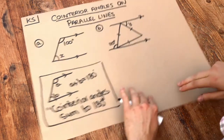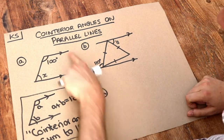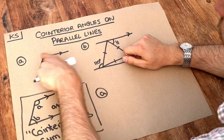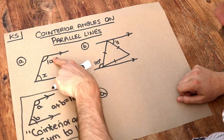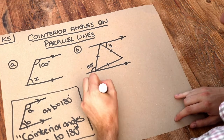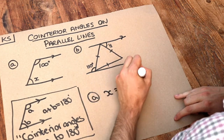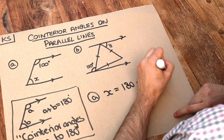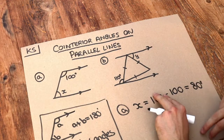Let's use that on these two problems. For part A, we've got co-interior angles — two parallel lines forming a C shape — and these two angles must add up to 180 degrees. Therefore x is just 180 take away 100, which is 80 degrees.